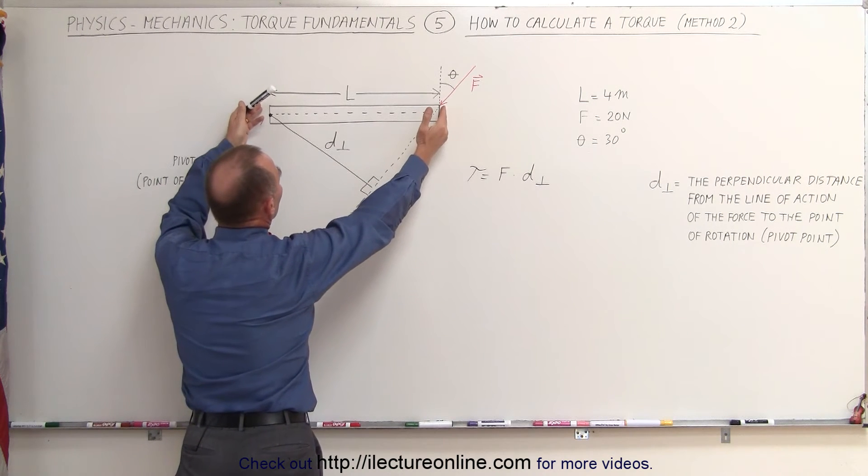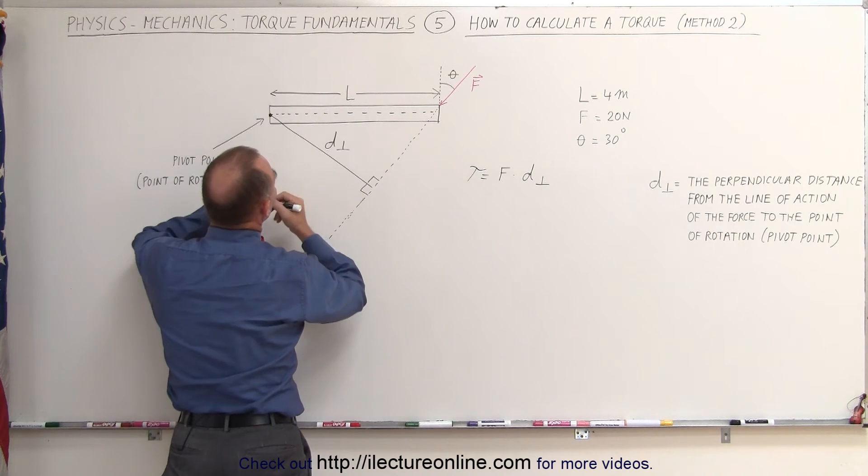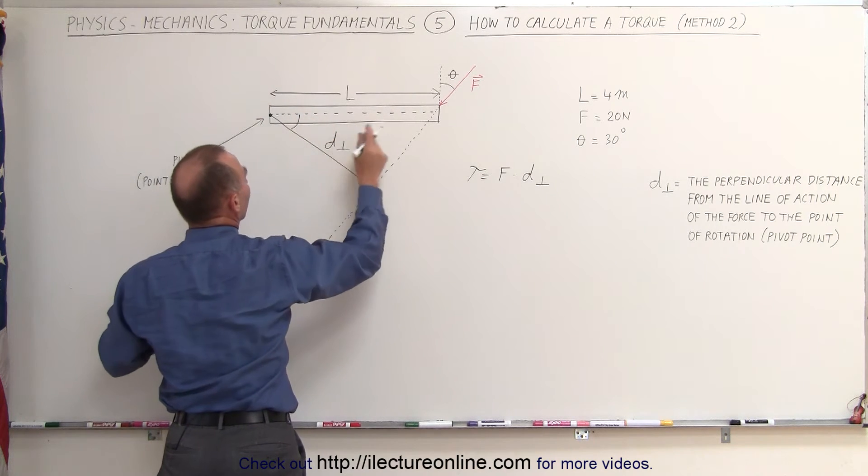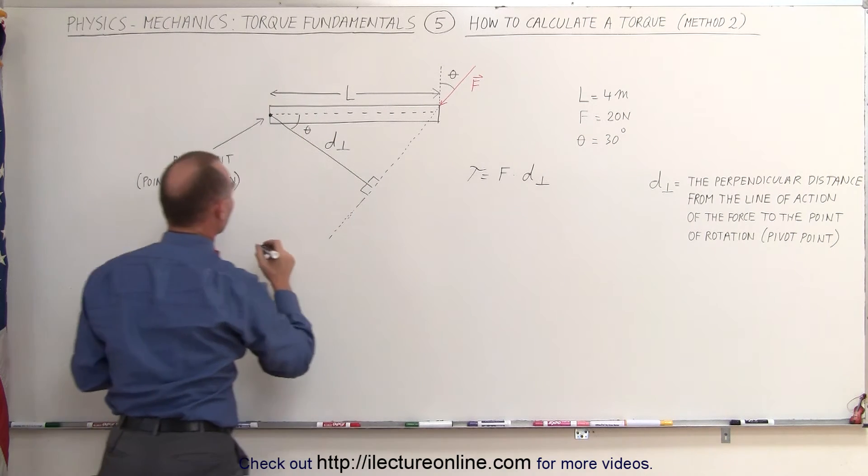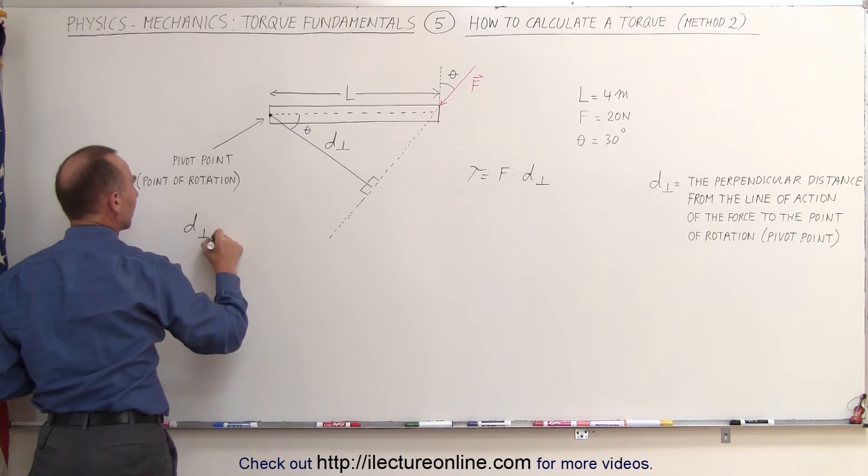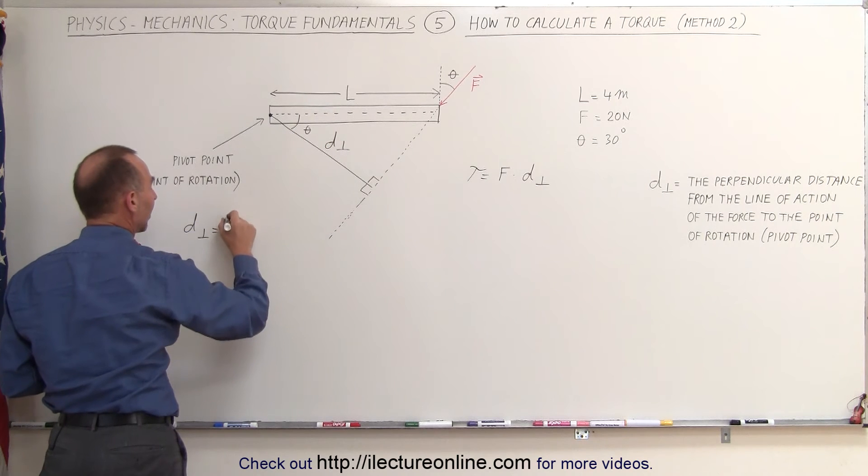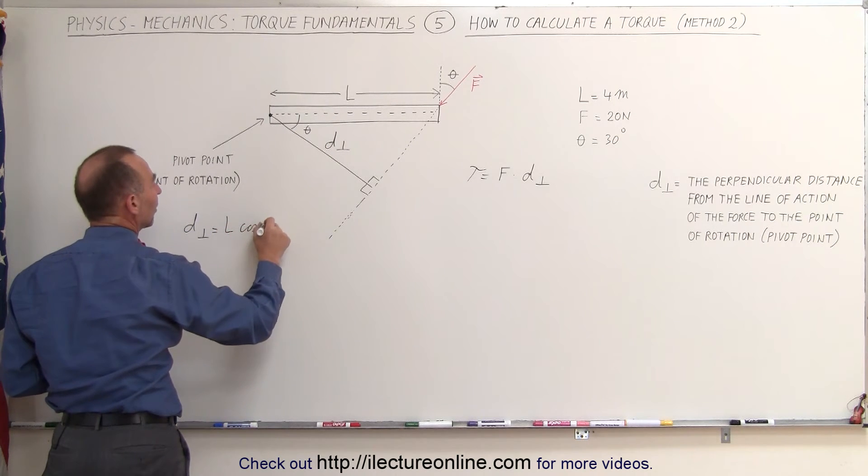This is the hypotenuse of that triangle, and this is the adjacent side to this angle right here. This theta here is the same as this theta right here. In other words, we can see that D perpendicular is equal to the hypotenuse L times the cosine of the angle theta.